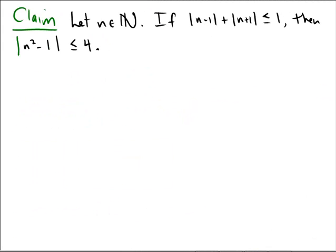Let's try to prove the following claim. Let n be a natural number. If the absolute value of n minus 1 plus the absolute value of n plus 1 is less than or equal to 1, then the absolute value of n squared minus 1 is less than or equal to 4.